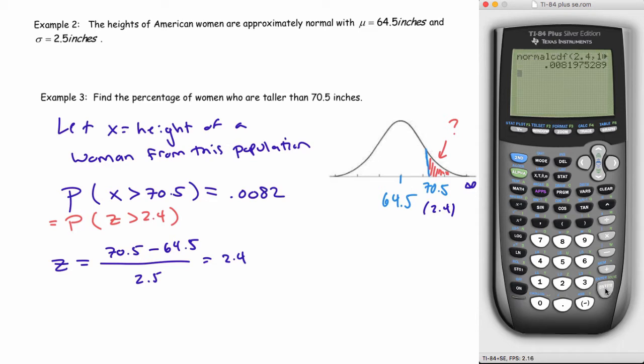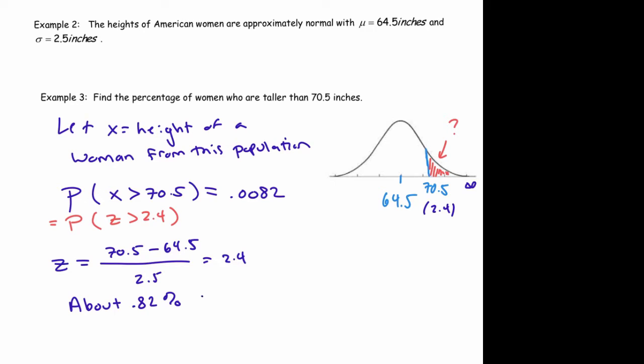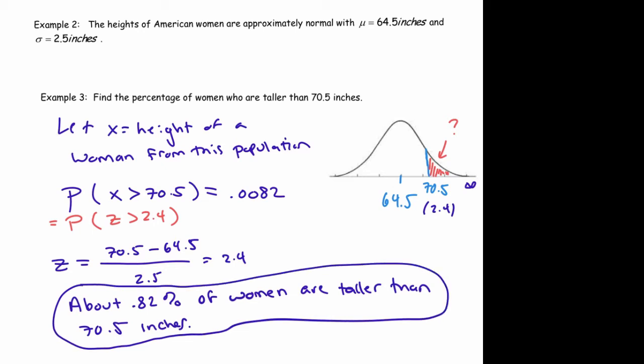Now if you move the decimal two places, that tells you the percent. So I'm going to say, to interpret, about 0.82% of women are taller than 70.5 inches. Now that makes sense because 70.5 inches is actually pretty tall. It's almost 5'11". So it makes sense that not many women are taller than 5'11". So the percentage of women taller than 5'11" should be pretty small, given what we know about how female heights are distributed.